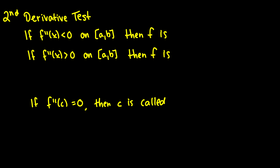In this video we're going to be taking a look at the second derivative test and some cool points called inflection points. We're going to be dealing with the second derivative, and if our second derivative is less than zero on some interval then f is going to be concave down. And if f double prime of x is greater than zero we're going to have that f is concave up.